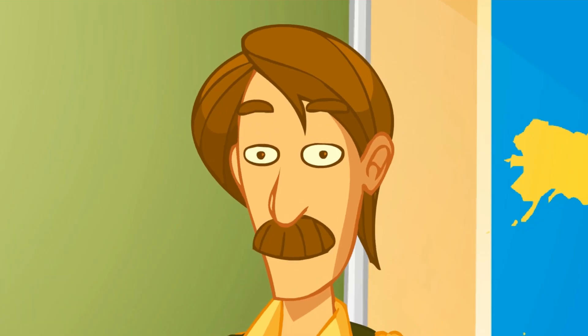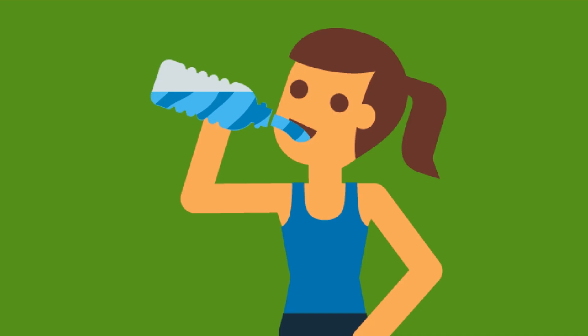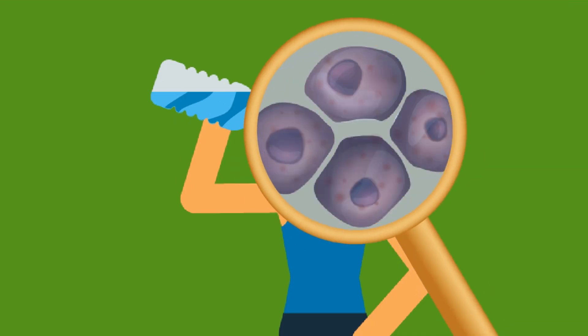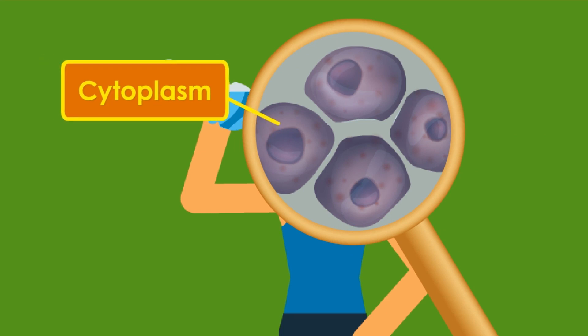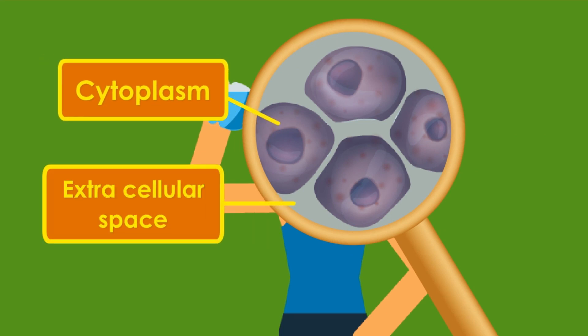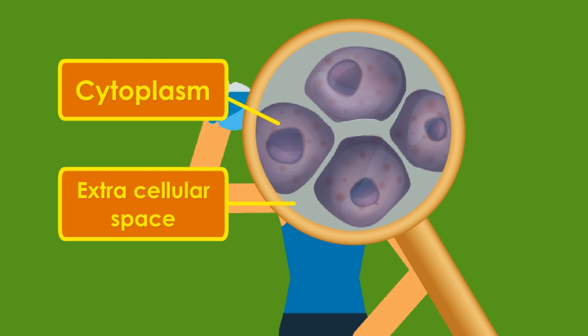How is it distributed? Most of it is inside the cells, in the cytoplasm, and the rest in the liquids surrounding the cells — the extracellular or intercellular space.